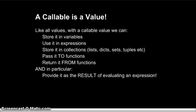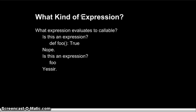So a callable object is a value, just like other objects. And because it is a value, we can do with it all the things we can do with other values. We can store it in variables, use it in expressions, store it in collections such as lists and dicts, pass it to functions, return it from functions, and last but not least, we can provide it as the result of evaluating an expression.